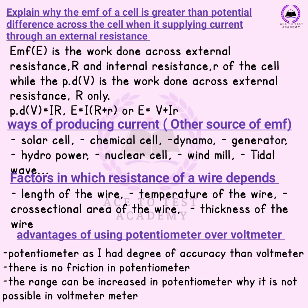The potentiometer has a higher degree of accuracy than the voltmeter. There is no friction in the potentiometer. The range can be increased in the potentiometer, which is not possible with the voltmeter.